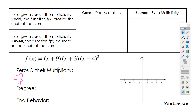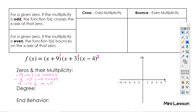The multiplicity is going to be the exponent. For negative nine, we see that it has an exponent of one — there's nothing written there, so we assume it's a one. Same thing for negative three — it has a multiplicity of one. The exponent for four is going to be two. If the multiplicity is one, it's going to cross; if it has a multiplicity of two, it's going to bounce.